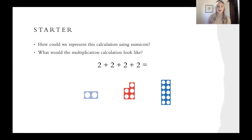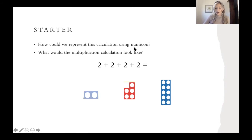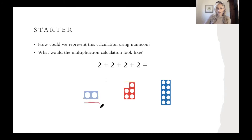Okay, well done for doing that. So I was thinking that we could use Numicon to represent this calculation. To start off with we need to look at how many groups of two we have, so let's count them: one, two, three, four. Now what I might do is get the Numicon piece that represents two — this piece here with the two holes — and I might draw another piece, another piece, and another piece. This might represent this calculation. So I've got four groups of two here.